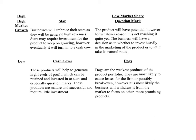In terms of the Dog, it's the weakest product of the product portfolio. These products are most likely to cause losses for the firm or just break even. Therefore, the business will most likely withdraw it. By cutting the costs of producing that product, they can recuperate those costs and reinvest into their Star products or even their Question Marks.